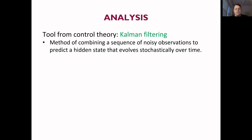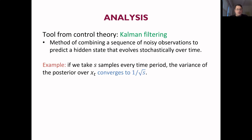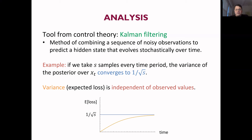To solve this problem and come up with a good policy, we're going to use a tool from control theory called Kalman filtering, which tends to be used in the analysis of say, controlling robotics. It's a method of combining a sequence of noisy observations to predict the hidden state, which is itself evolving statistically over time — which is exactly the setting we're looking at. Using this theory, if we took S samples every round, the variance of my posterior will eventually converge to something like one over the square root of the number of samples we're taking. This variance is actually independent of the observed values. So the actions we take — the guesses we make — depend on the actual samples we obtain, but our expected loss is actually independent of the past. This is a property of Gaussians that's particularly convenient.